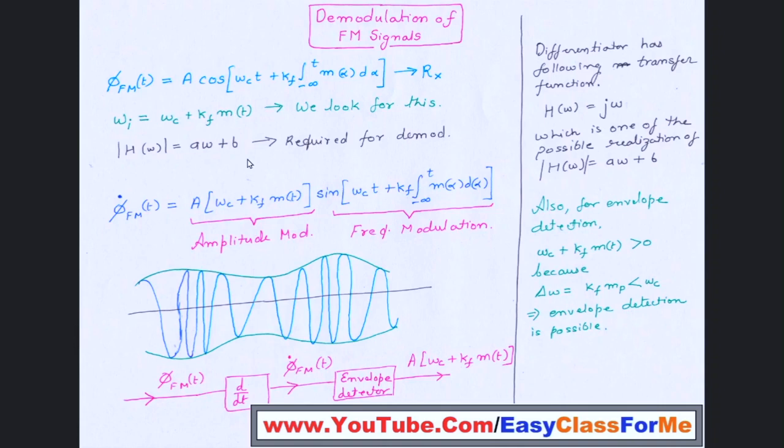So the frequency domain response of this particular signal, whatever it will be, it will be multiplied with this aω + b, ω being the frequency at which we are operating.